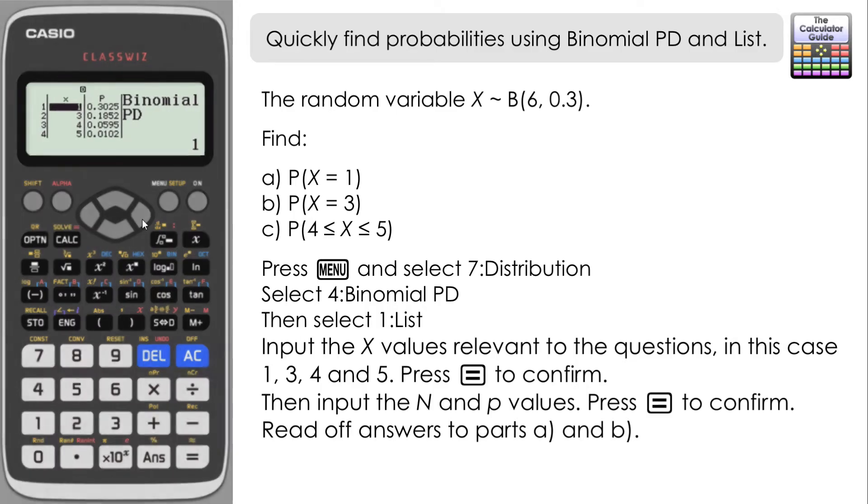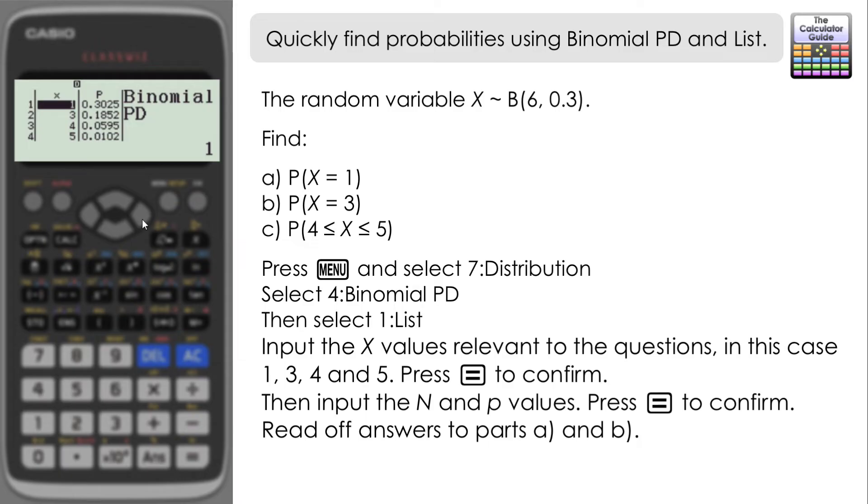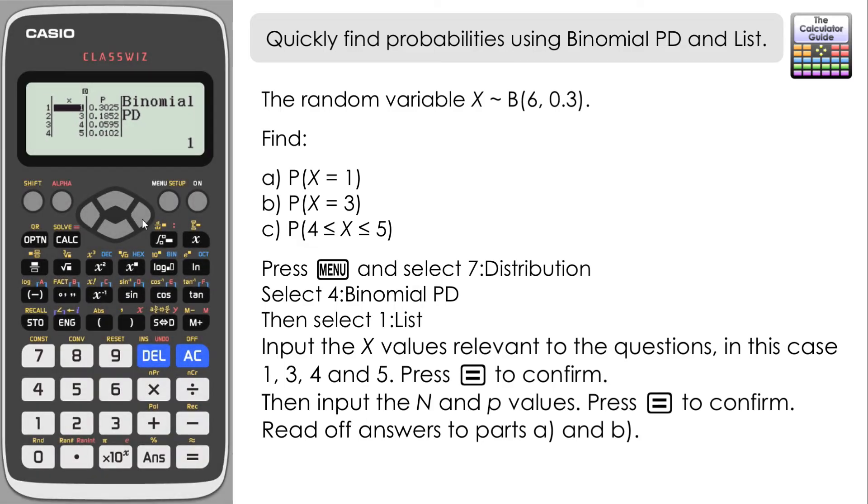And you can see on the probability column there, we have now a list of probabilities that are going to be relevant to us. So if you navigate right, we can see a fuller display.